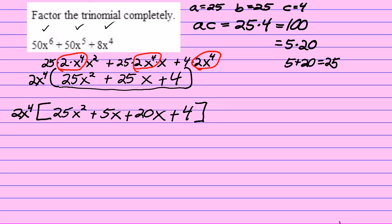Now, I'm going to group the first two terms, and I group the second two terms, and I'm very careful to leave the plus sign in the middle. And don't forget to write your 2x to the fourth on the outside of the brackets.